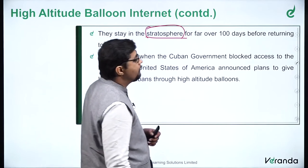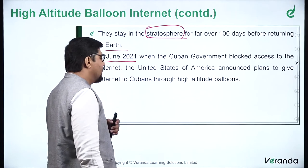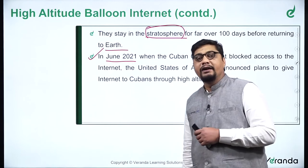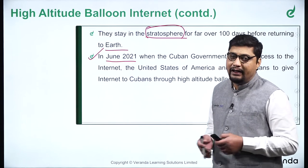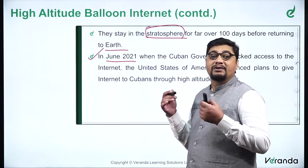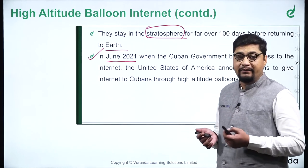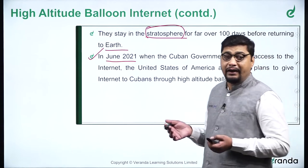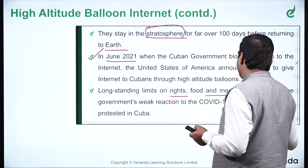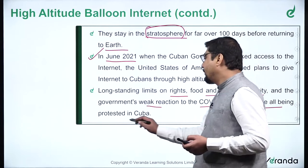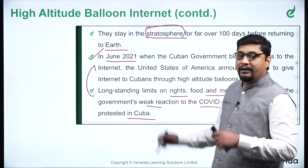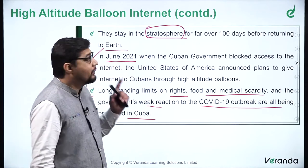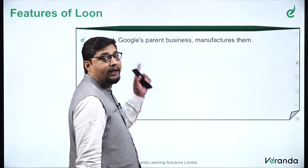In June 2021, when the Cuban government blocked access to the internet, the United States of America announced plans to give internet to Cubans through high altitude balloons. If a government bans the internet, these projects can still provide internet at those places. Long-standing limits on rights, food and medical scarcity, and the government's weak reaction to the COVID-19 outbreak were all being protested in Cuba, and because of these reasons they blocked the internet. But providing internet via high altitude balloons was proposed as an option.